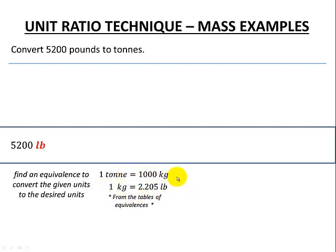And by the way, we might have more than these equivalences. There might be other ones that we could also use. So since I have pounds to start with, I'll start off with the 2.205 pounds is the same as 1 kilogram. And then I'll use the 1 ton is 1,000 kilograms.